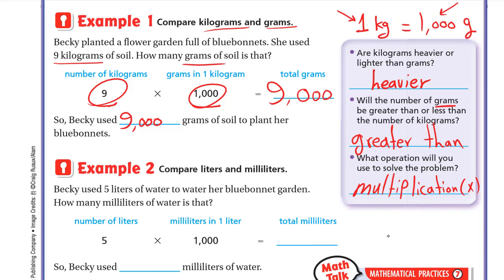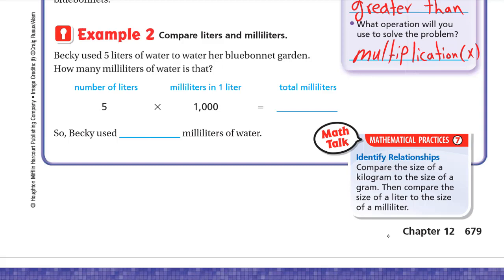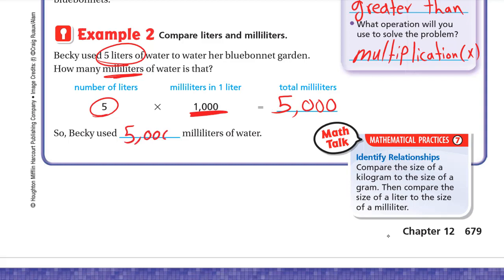So from kilograms to grams, you multiply by 1,000. Multiplying by 1,000 is easy — just write the number and add three zeros. Example two: Becky used 5 liters of water. How many milliliters is that? Same rule: 5 liters multiplied by 1,000 equals 5,000. So Becky used 5,000 milliliters of water. From liters to milliliters, multiply by 1,000.